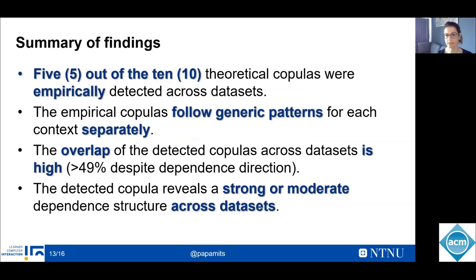Overall, out of ten theoretical copulas, five were empirically detected across datasets. From the elliptical copulas that imply a linear dependent structure, the T copula was not detected at all, and the Gaussian copula was detected only in specific blocks. Hence, the nature of the underlying relationship between the variables of interest is non-linear, but some linearity is detected, as blocks in specific percentiles follow linear behavior. Moreover, in each context, the detected copulas follow generic patterns across datasets. These copulas show that the co-movement of those variables in the tails of distribution follows specific patterns.